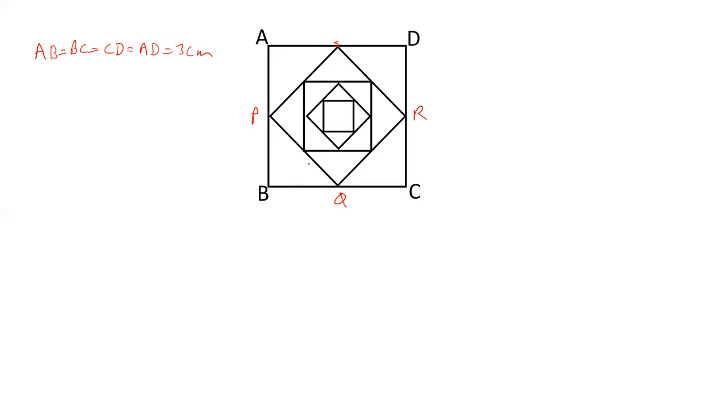Now let us calculate the length of PQ. If P is the midpoint of AB, so this is 3 by 2 and this is also 3 by 2.